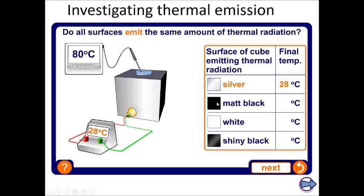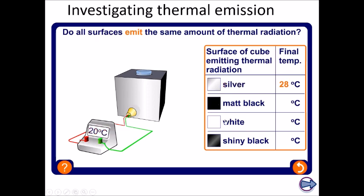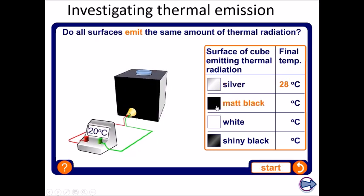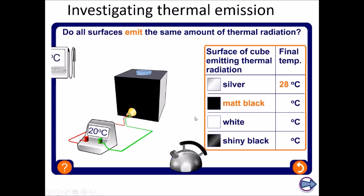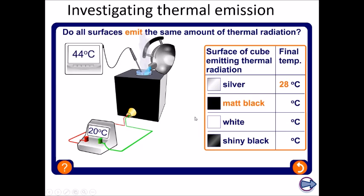But if we put the matte black side in front of it, two things you notice here: one is it's black and not silver, so it's a different color. However, the matte part of this is the fact that it's not very reflective. So we do the same thing. It heats up to 80 degrees C again, but this time it seems to be 42 degrees C.